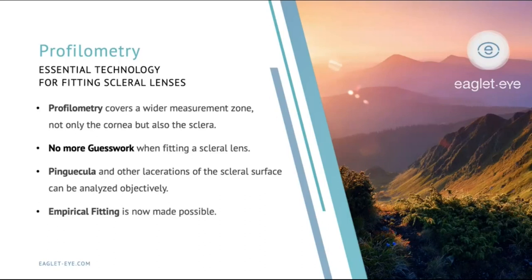This means there's no more guesswork when fitting a scleral lens. We know the surface we're trying to align to. Things like pingueculas and other irregularities of the scleral surface — tubes and shunts — can be analyzed and measured objectively. The really exciting aspect of this is that empirical fitting is now truly possible, where we don't have to use diagnostic lenses that we have to disinfect and maintain in fit kits.